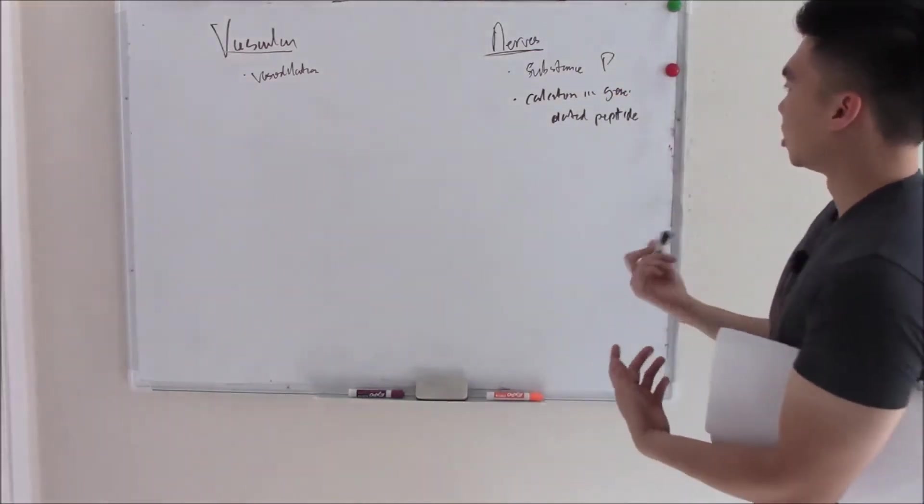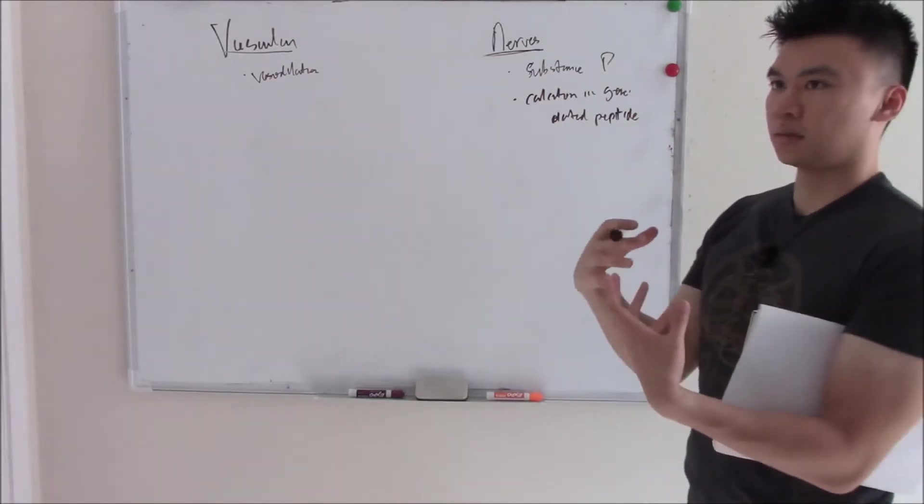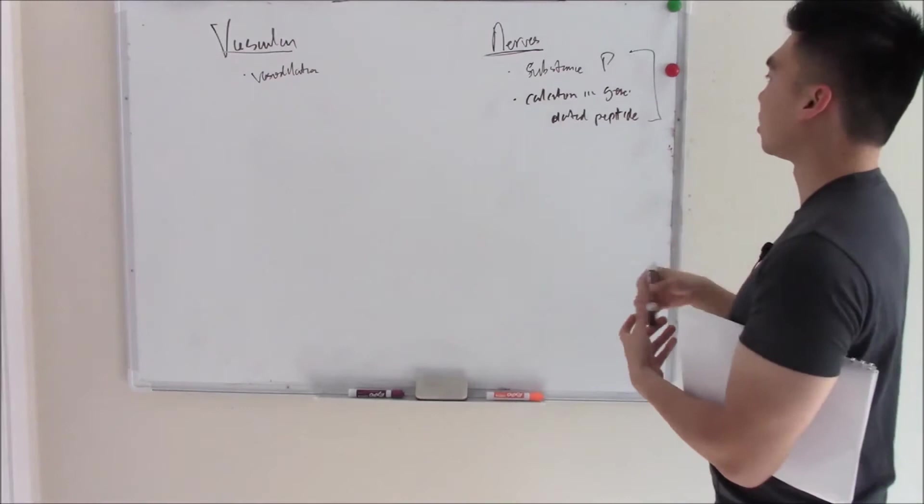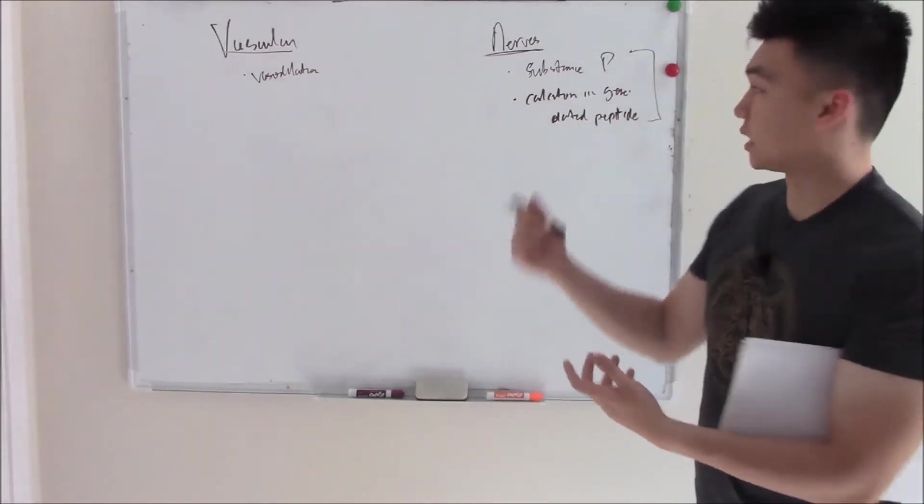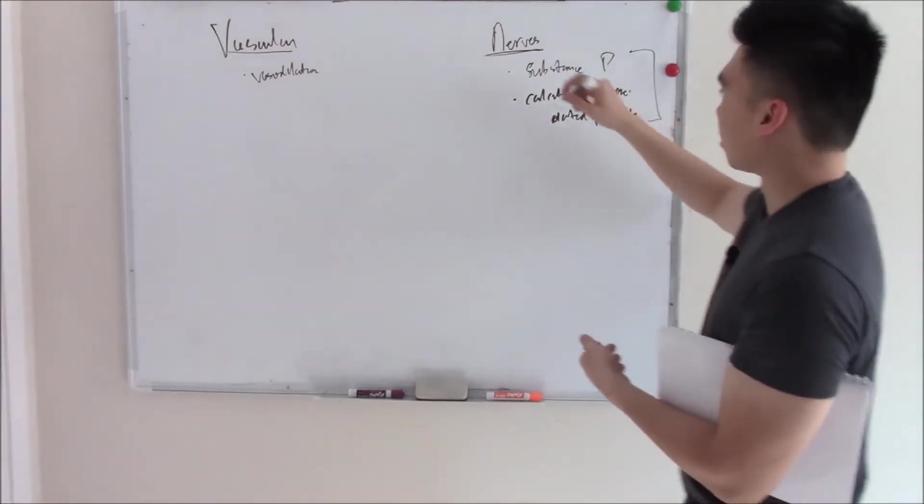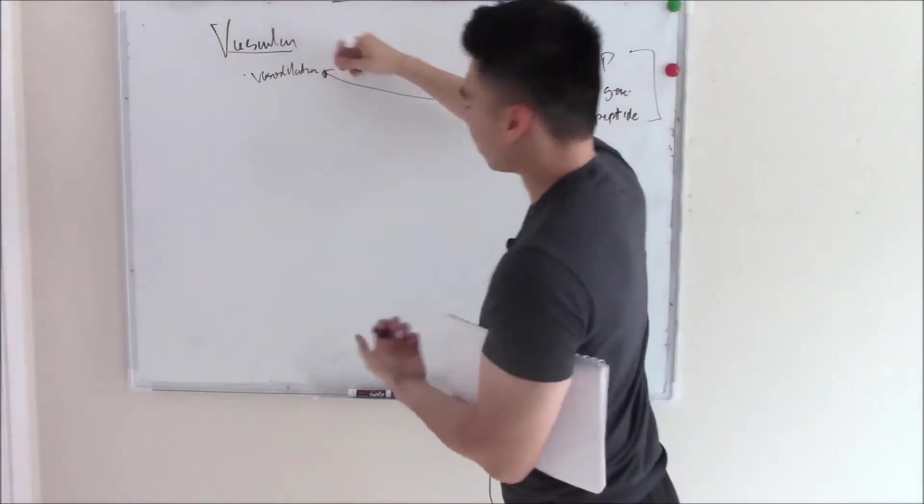They call it calcitonin gene-related peptide because it's a peptide that's found in the same gene that codes for calcitonin. These neurotransmitters help modulate pain and we see these more in headaches, so we think there's a neural component. And surprise, surprise, these also are vasodilators.